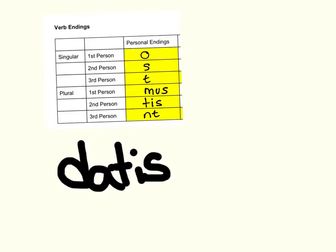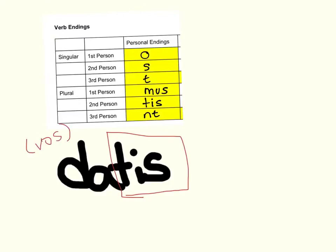This verb is datis. First thing you do is isolate that ending — that ending is tis. Tis is second person plural, which means that's a y'all. So the subject is understood to be vos, because vos is the Latin word for y'all. Dat — we've seen this word on our vocab — dat means to give. So datis means, putting it together with a subject, y'all give.